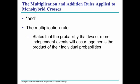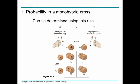The AND rule: any time you see AND in a probability problem, you multiply. The OR rule: any time you see OR, you add. For example, if you're flipping a coin twice and you want heads AND heads, you do one-half times one-half, which is one-quarter. But if you want heads OR tails, you do one-half plus one-half, which equals one.